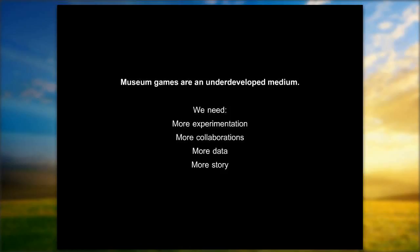I don't mention Jurassic Park here idly. Jurassic Park marked a sea change in cinema when we started to see the first serious attempts at incorporating CGI into films. It's hard to imagine a high-budget film now without computer graphics, but that didn't even start until a century after film was invented. So if we're going to push this field of museum games forward — and more broadly, video games in general — what do we need to be doing? The four things we really need to work on are: more experimentation, more collaborations, more data, and more story.